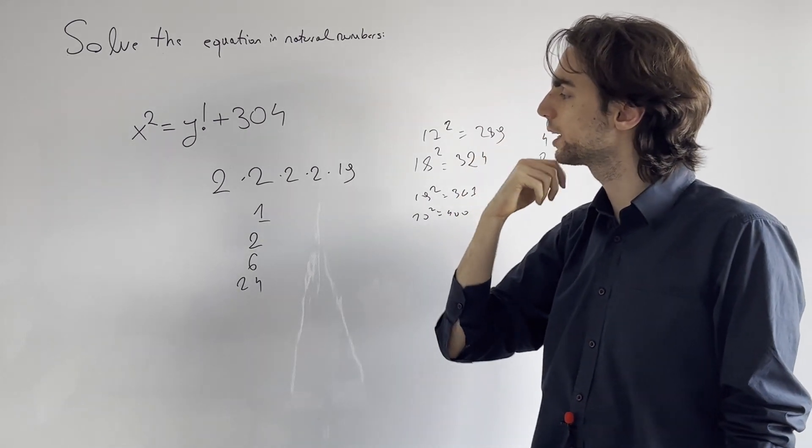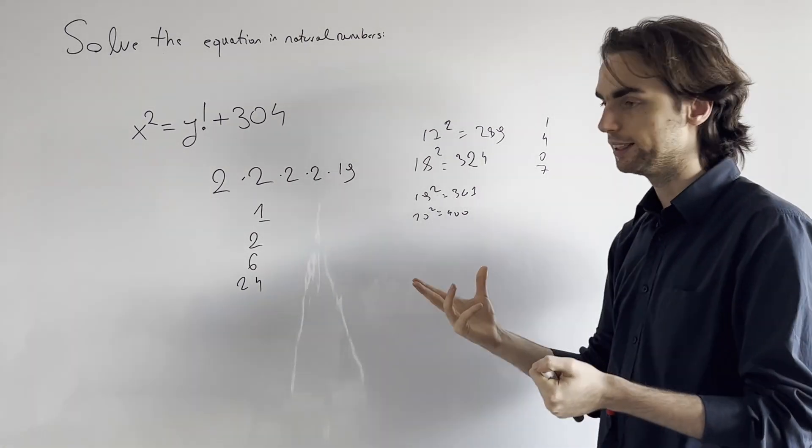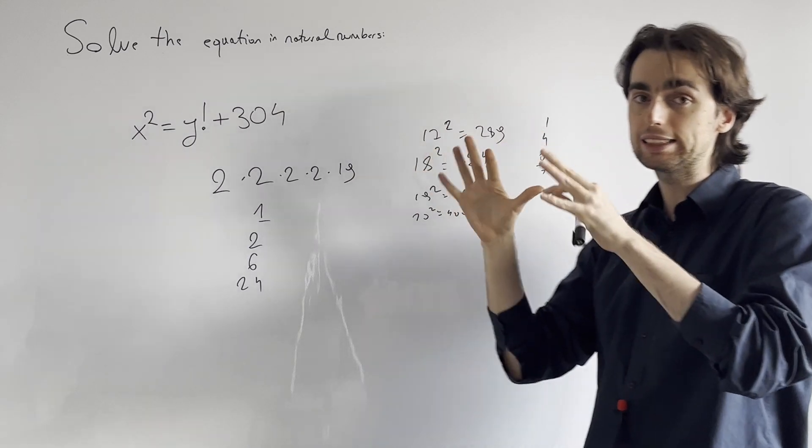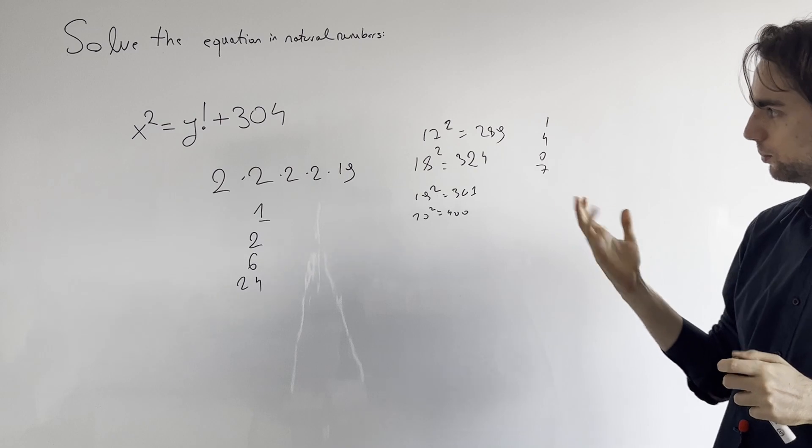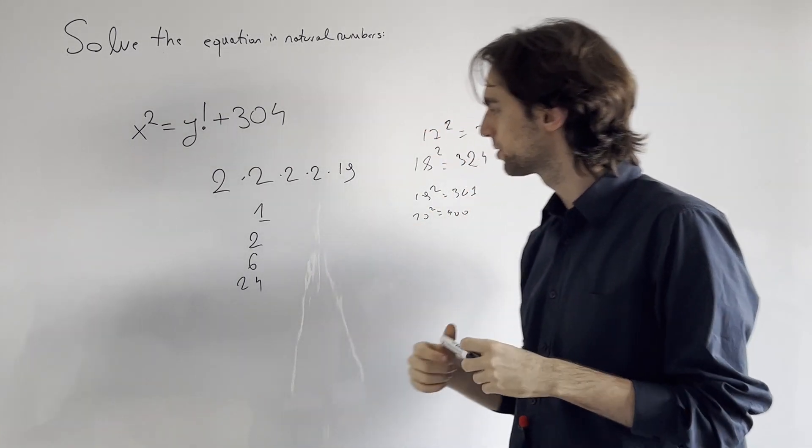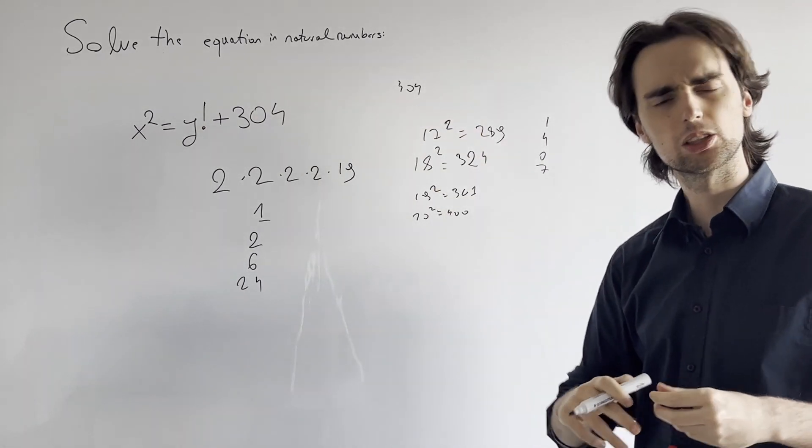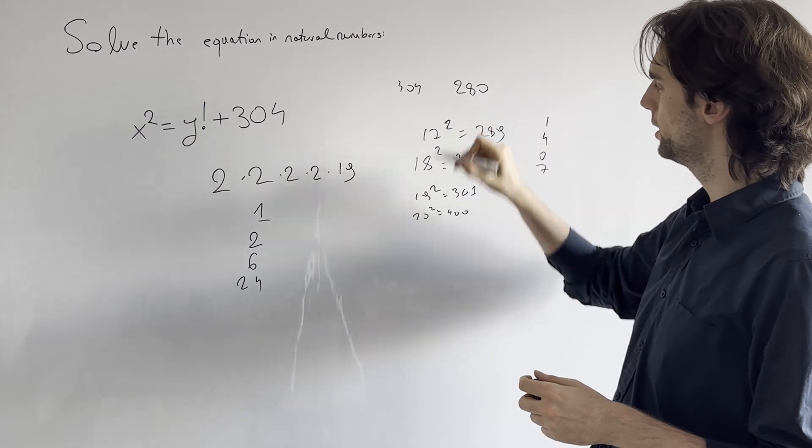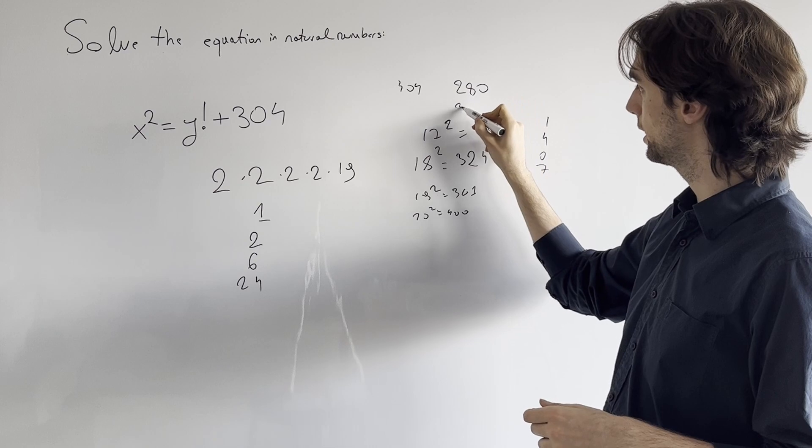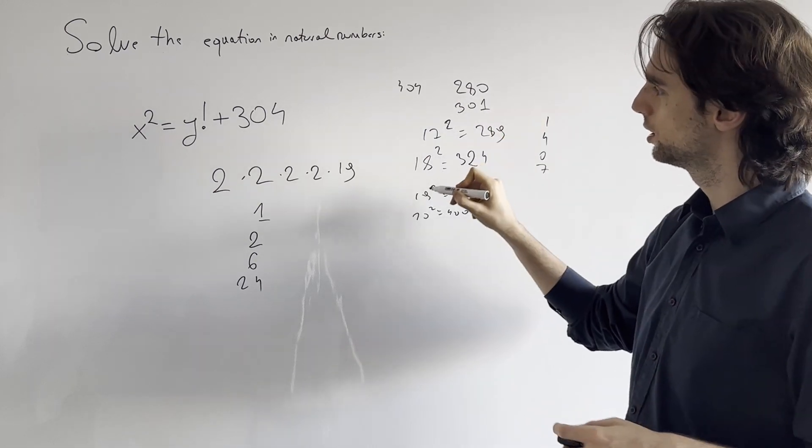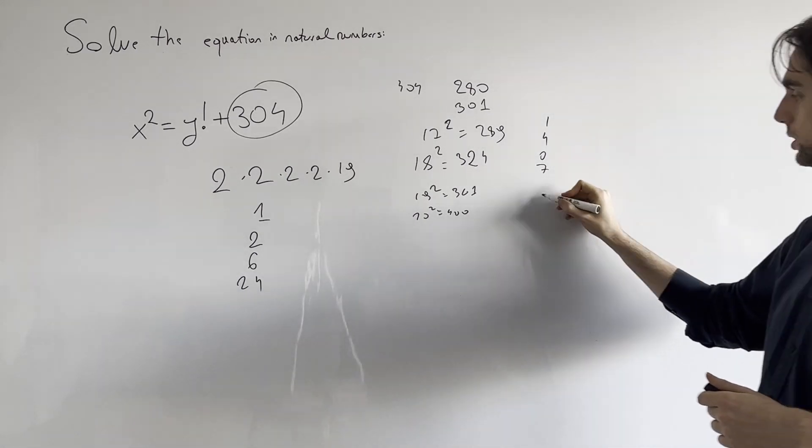What if we try? What else can we try here? Like this is the type of problem where you put a bunch of ideas and just like try to see what is it that will stick. So let's see. What if we put, what if we take modulo 7? So modulo 7, this is going to be 304. So what is something that's close is 280. This is divisible by 7. If I add 21, that gives me 301. So this here is 3 modulo 7.